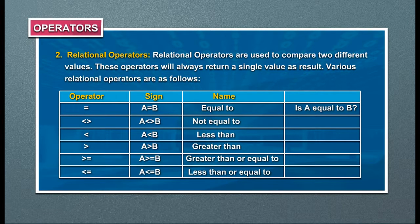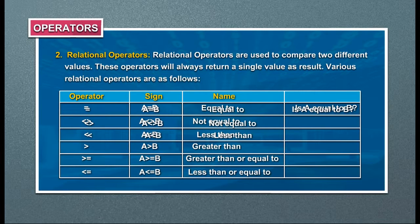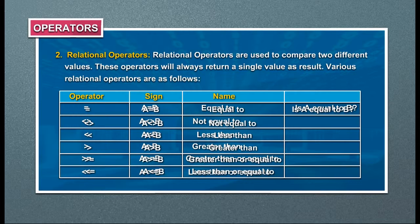Relational operators: equal to (=), e.g., a = b; not equal to (<>), e.g., a <> b; less than (<), e.g., a < b; greater than (>), e.g., a > b; greater than or equal to (>=), e.g., a >= b; and less than or equal to (<=), e.g., a <= b.